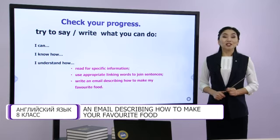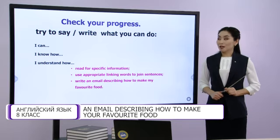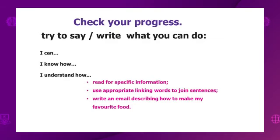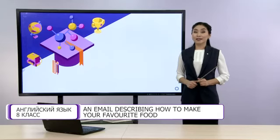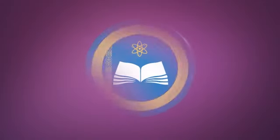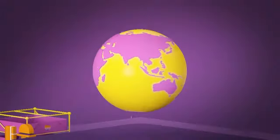At last, check your progress. Try to say or write what you can do. For example: I can read for specific information. I know how to use appropriate linking words to join sentences. Or: I understand how to write an email describing how to make my favourite food. That's all for today. See you next lesson. I hope you have understood all the material we have learnt. Thank you.